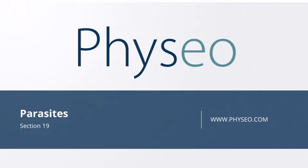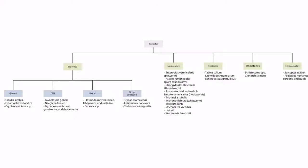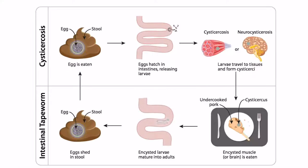Welcome to section 21 of the parasites. This is our overview figure showing the parasites you need to know for step one. In this lecture, we will be talking about the first cestode, Taenia solium. Let's first hash out the life cycle of Taenia solium.